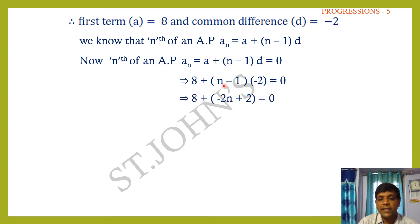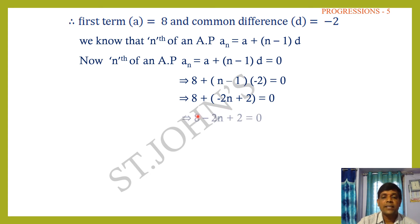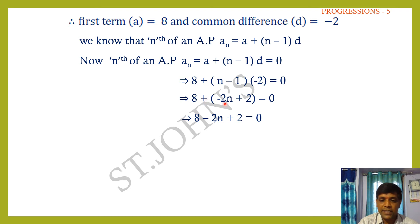Question number 3: The 9th term of an AP is equal to 6 times its 2nd term. If the 5th term is 22, find the AP. First analyze: 9th term = a + 8d; 2nd term = a + d.